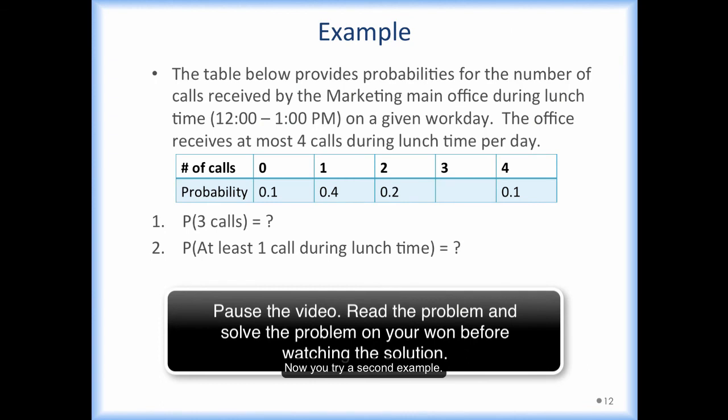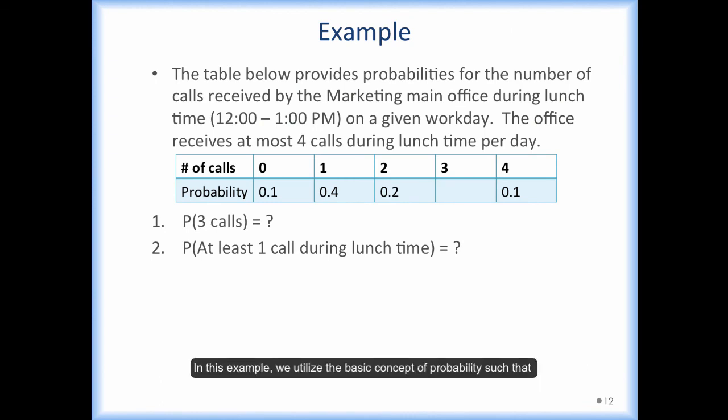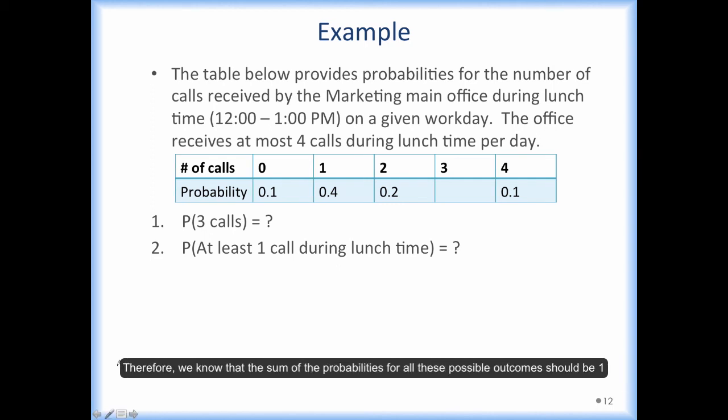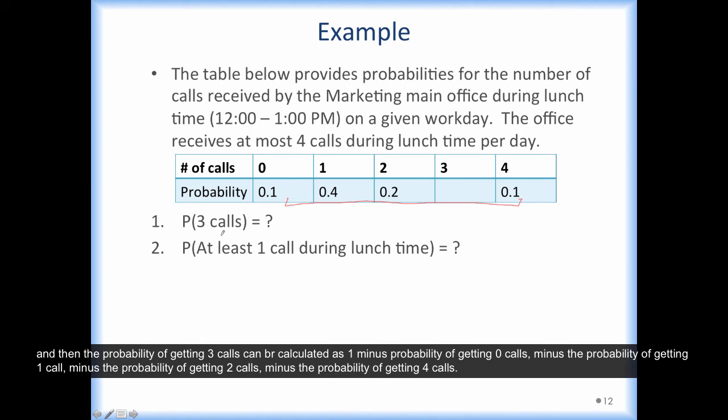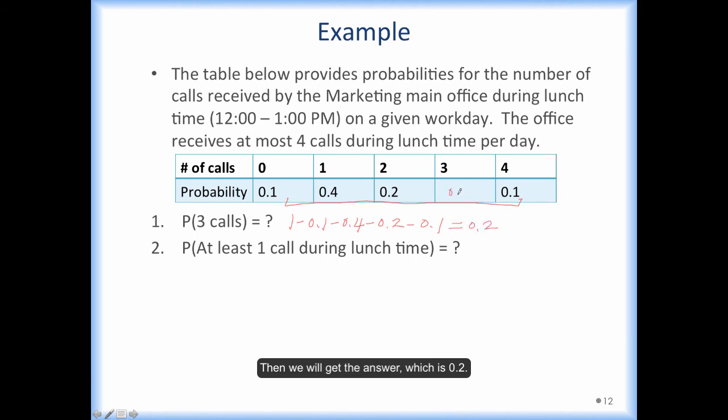Now you try a second example. In this example, we utilize the basic concept of probability such that the sum of the probabilities for all sample points in an experiment is 1. Therefore, we know that the sum of the probabilities for all these possible outcomes should be 1. And then the probability of getting 3 calls can be calculated as 1 minus probability of getting 0 calls, minus the probability of getting 1 call, minus the probability of getting 2 calls, minus the probability of getting 4 calls. Then we will get the answer, which is 0.2.